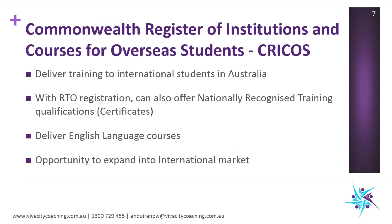A CRICOS organization — the Commonwealth Register of Institutions and Courses for Overseas Students — means you are able to deliver training to international students coming into Australia on a student visa. The biggest difference between a CRICOS provider and an RTO is that as a CRICOS provider, you are responsible for the safety and care of those students whilst they're in Australia. ASQA has stringent requirements around how you should monitor students and ensure they're meeting visa requirements.